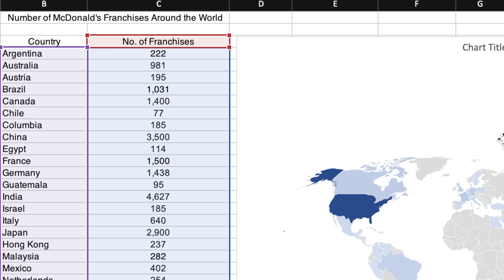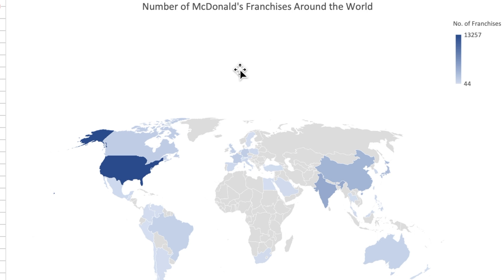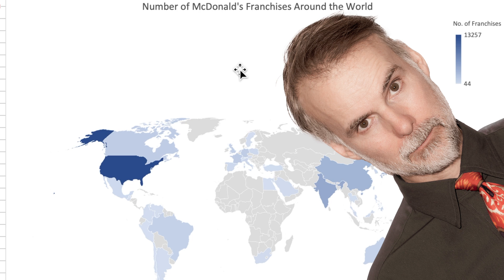Next, add the title by simply copying and pasting the title from the spreadsheet. The choropleth map is complete — but is it really the most effective way to display the data?